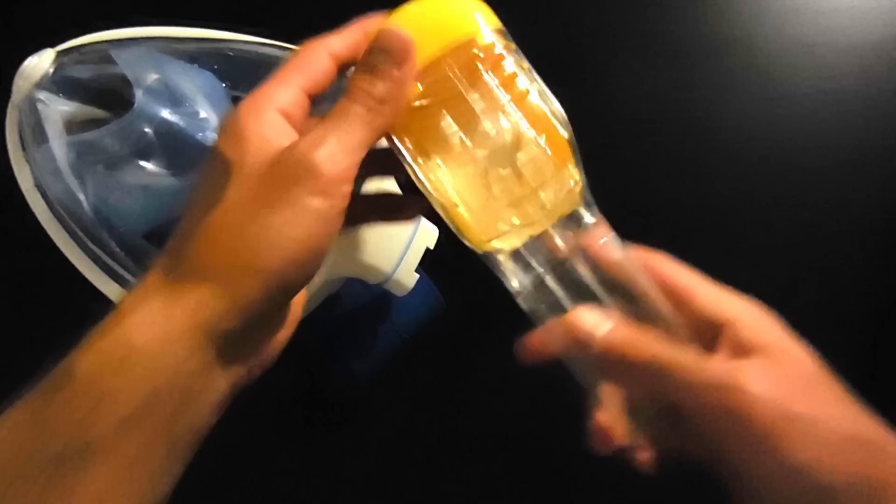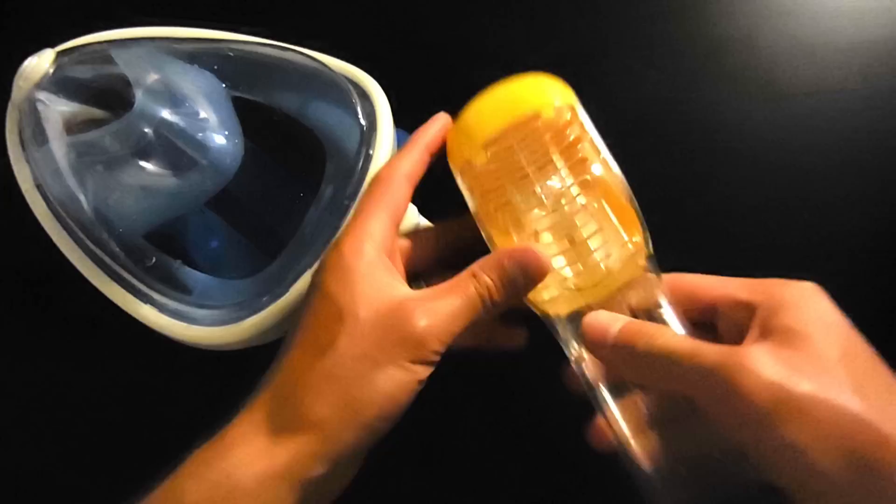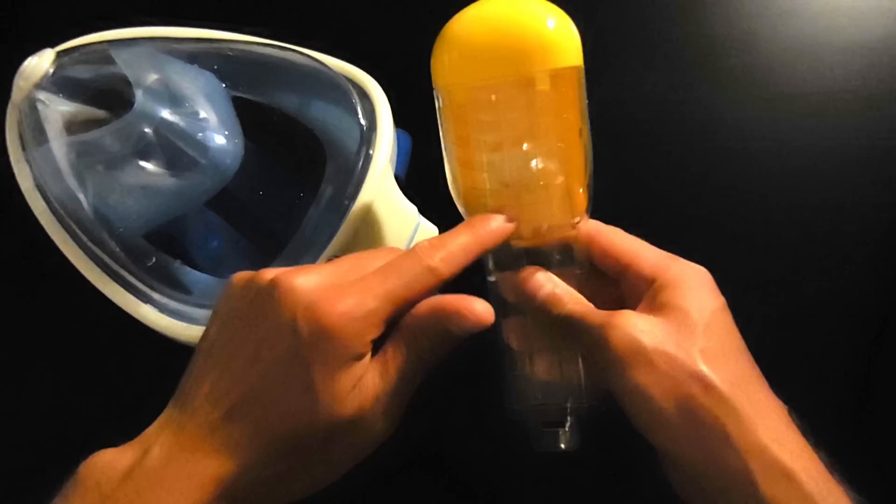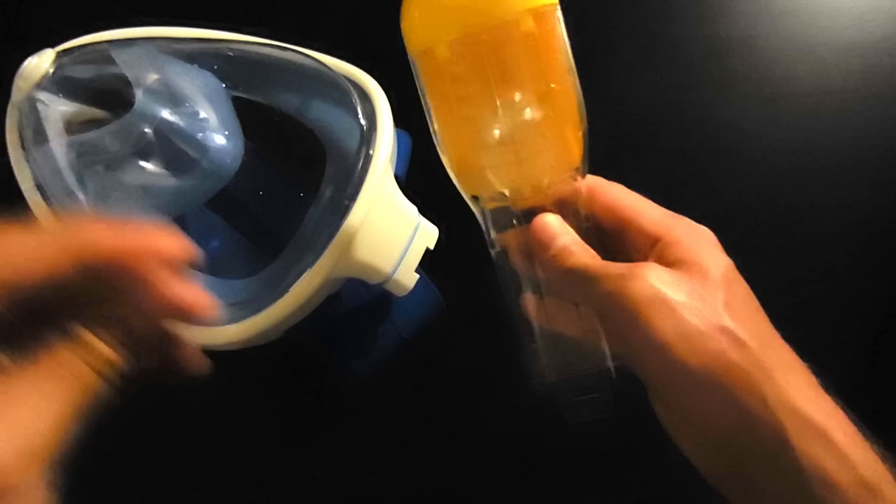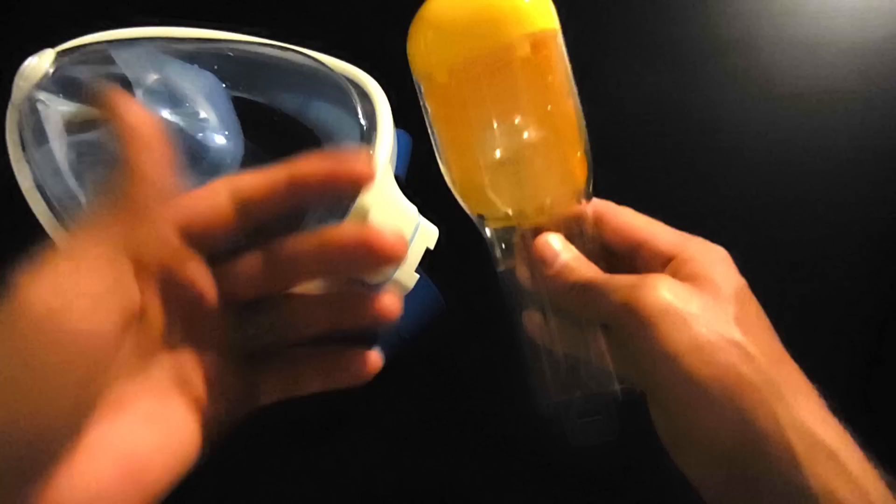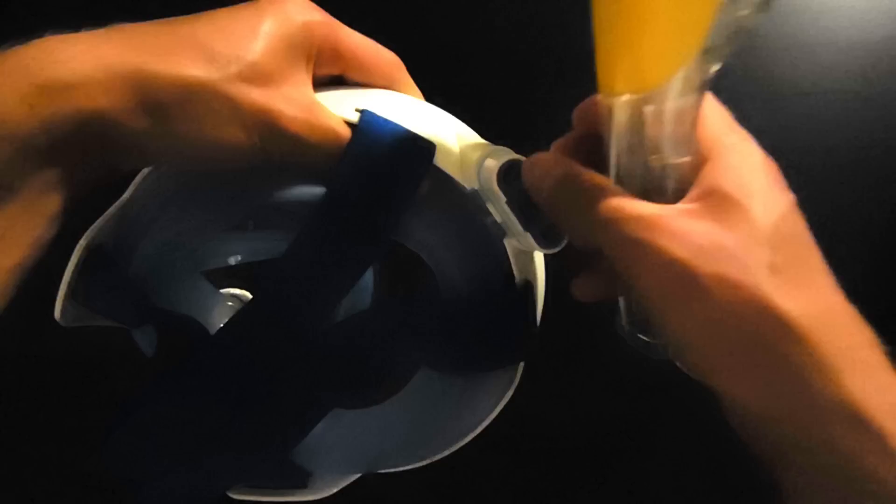You'll notice at the top of the snorkel, there's a little ball that rolls back and forth. When you're snorkeling at rest, it's down here. But when water splashes, it pushes the ball to the top, seals off the air coming through, acts like a dry snorkel. It has been very successful for me. I haven't had any problems with water leaking through the snorkel down to my mask when snorkeling. Which is important because the valve opening is right there, right above where your eyes are going to be. You don't want water leaking in.